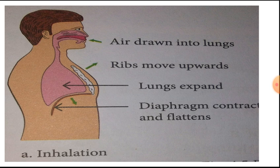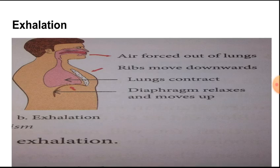Now, exhalation — when we breathe out — the diaphragm moves upwards and the ribs move downwards and backwards. During inhalation the ribs move upwards and outwards, but in exhalation the ribs move downwards and backwards. The volume of the chest cavity decreases, which increases the pressure inside the chest cavity, and air rushes out of the lungs.